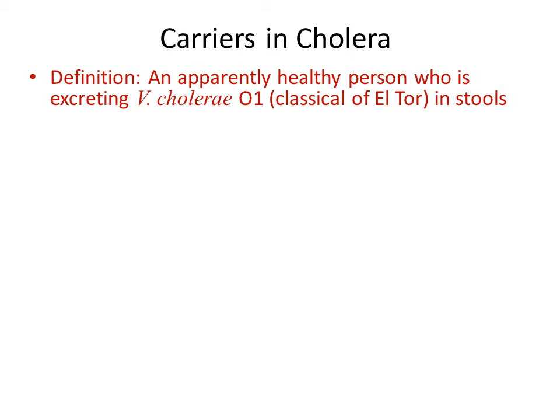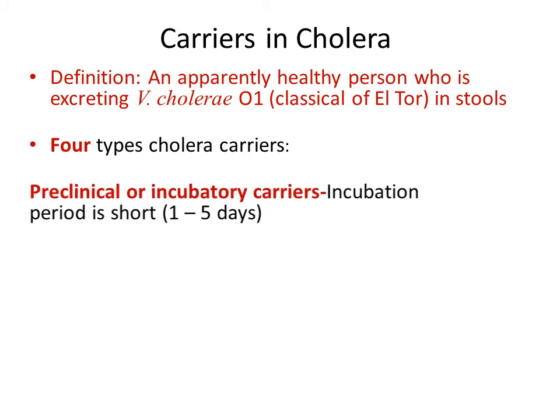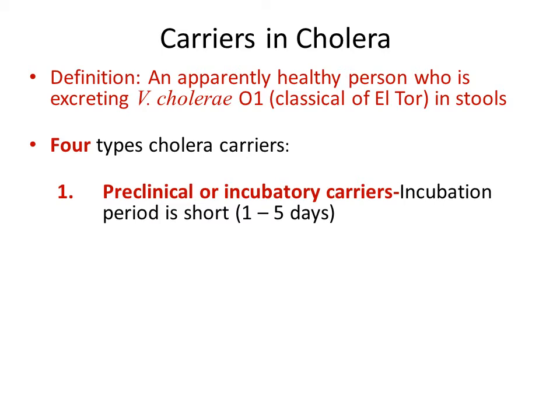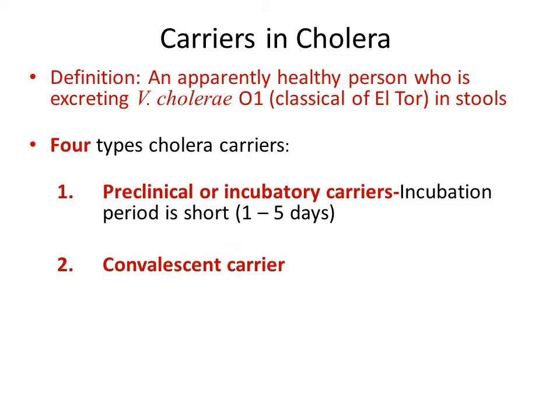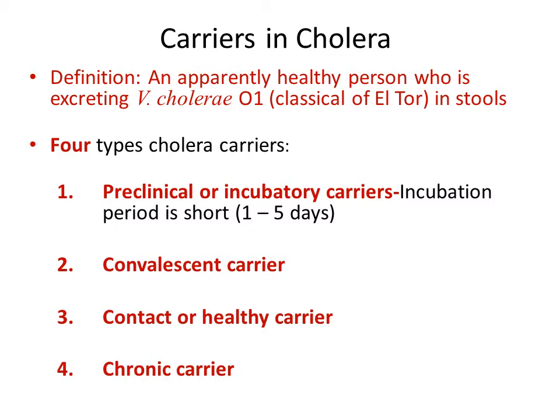A carrier is defined as an apparently healthy person who is excreting Vibrio cholerae O1 in stools. Four types of carriers have been described in cholera: preclinical or incubatory carriers, convalescent carriers, contact or healthy carriers, and chronic carriers.